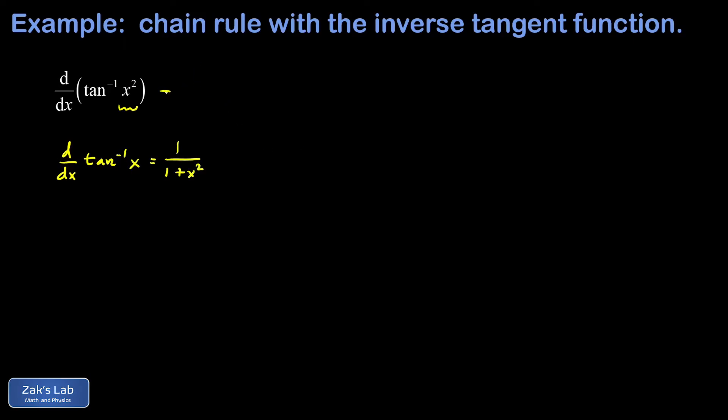So what about the derivative of the inverse tangent of x squared? Well, the chain rule says I differentiate this with respect to this argument, x squared, treating it as a single variable.